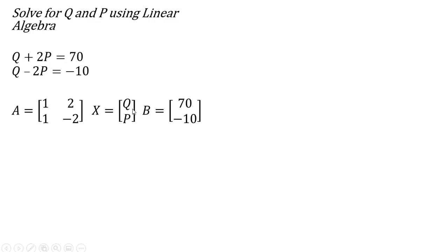And then we have the matrix of the variables, q and p. And then we have our column vector of constants, 70 and minus 10.